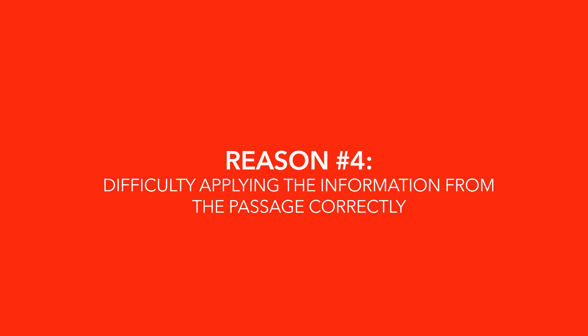Reason number four: apply the information from the passage correctly. Along with understanding the main idea, it's crucial that you correctly use the information within the passage to answer questions. Test writers love to trip students up by using the right words in the wrong way — they'll use information or direct quotes from the passage that students recognize as familiar and want to choose, but alter the context or specific words to make the answer incorrect. Be sure that if you choose an answer choice, you know exactly what it's saying. A great check is to reread the question one more time to ensure your answer choice actually answers the question. What students often find is that after spending a minute or two trying to answer a question, they may have forgotten what the question is actually asking.